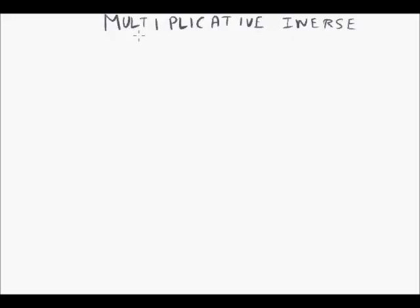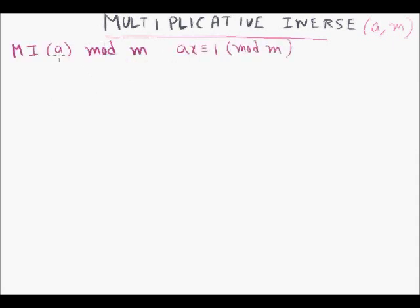In this lecture we will learn about a very good mathematical tool known as the multiplicative inverse of a number a modulo m. It is a number x such that when you multiply a into x and divide by m, you get a remainder of one — so ax ≡ 1 (mod m).